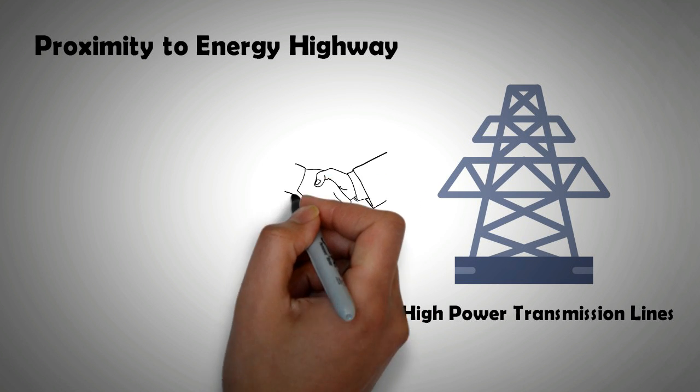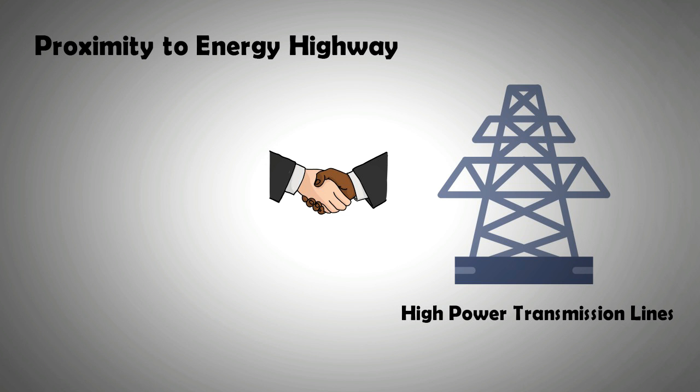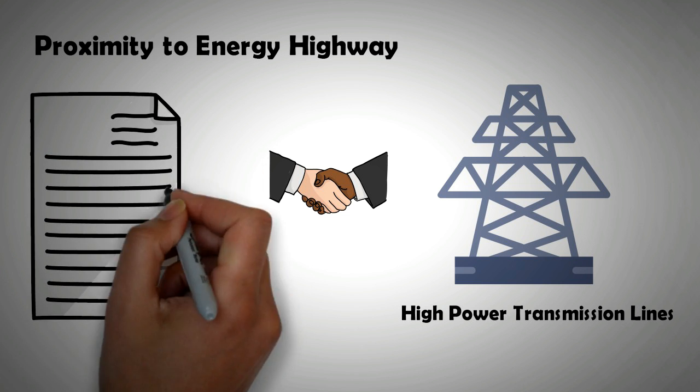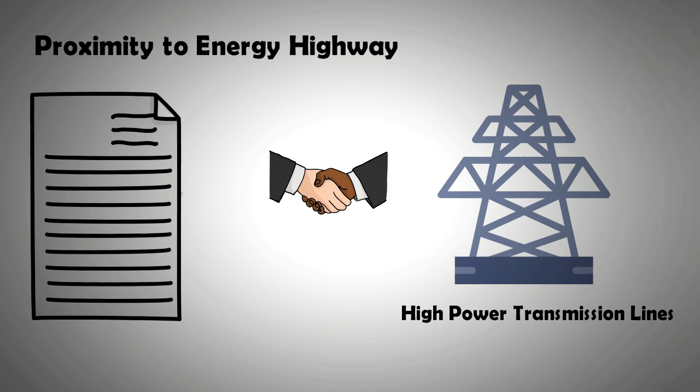There are instances where energy companies have picked up the tab for installing transmission lines to the wind farm. In such cases, this cost is adjusted in the power purchase agreement. Thus, the benefit to the wind farm owner is greatly reduced. If the energy of the turbine is to be consumed locally, then the issue of proximity does not arise.